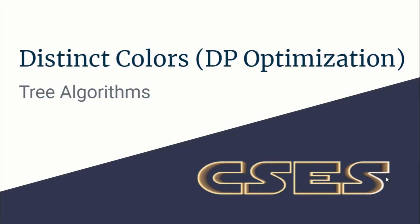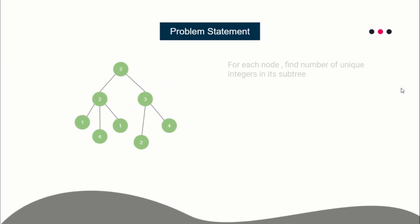Hello guys, this is Code In Code, and this is a video editorial for the problem Distinct Colors, taken from CSCS. This is from tree algorithms, and we'll apply DP optimization to solve this problem. We'll apply DP along with a smaller-into-bigger DP optimization, because otherwise we are bound to get TLE.